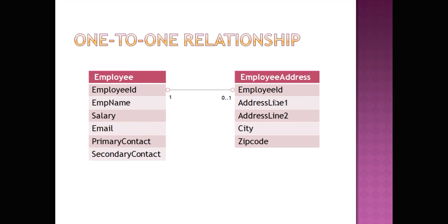The methods available in Fluent API are: Employee has optional Employee Address, whereas Employee Address has required Employee. So the convention we use in Fluent API matches the naming — 'hasOptional' and 'withRequired'. These two methods we are going to see. Let us implement it in Visual Studio.